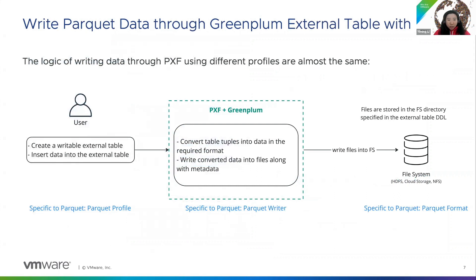Before my coding demo, I'd like to give you a high-level picture about how data is read and written between Greenplum PXF and external data sources. These are generic flows of data reading and writing through PXF; only small parts are different when you choose different PXF data profiles. Here is the write logic: when a user creates a writable external table with a Parquet profile and inserts some data into it, PXF and Greenplum will generate Parquet schema, convert table tuples into Parquet format, and write Parquet data along with the metadata into the specified location in the file system. At this point, the user can see Parquet files are generated in that location.